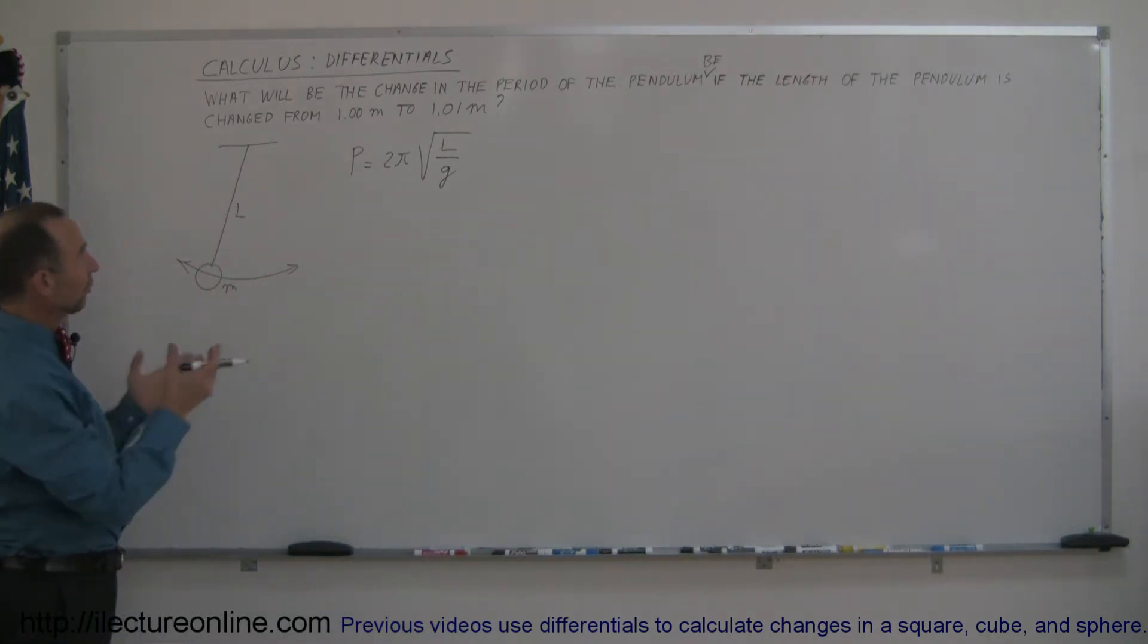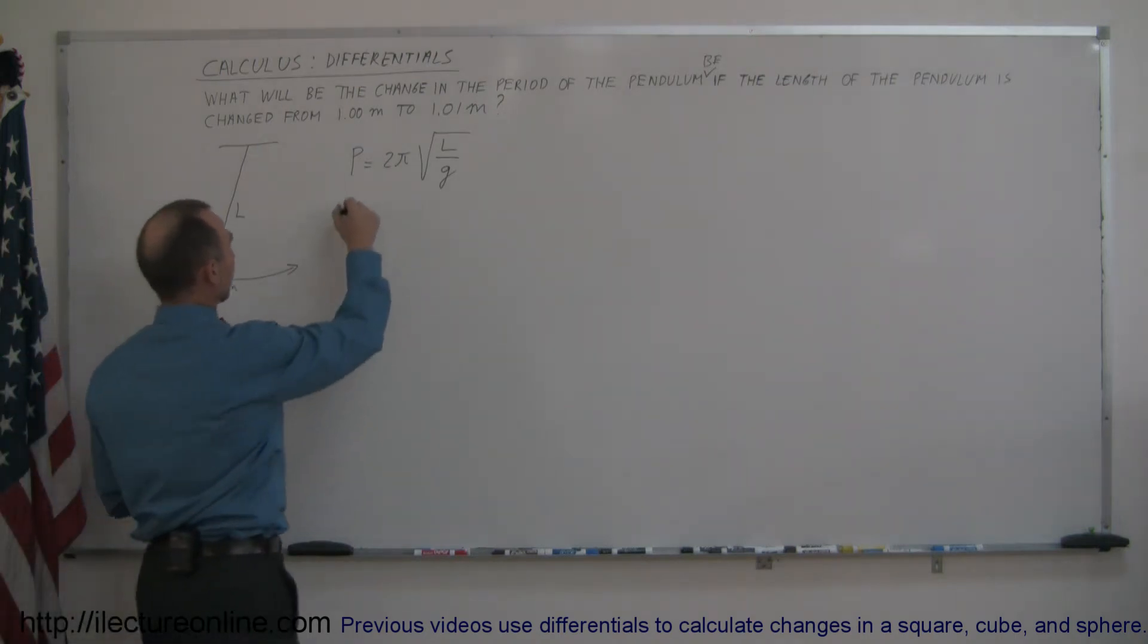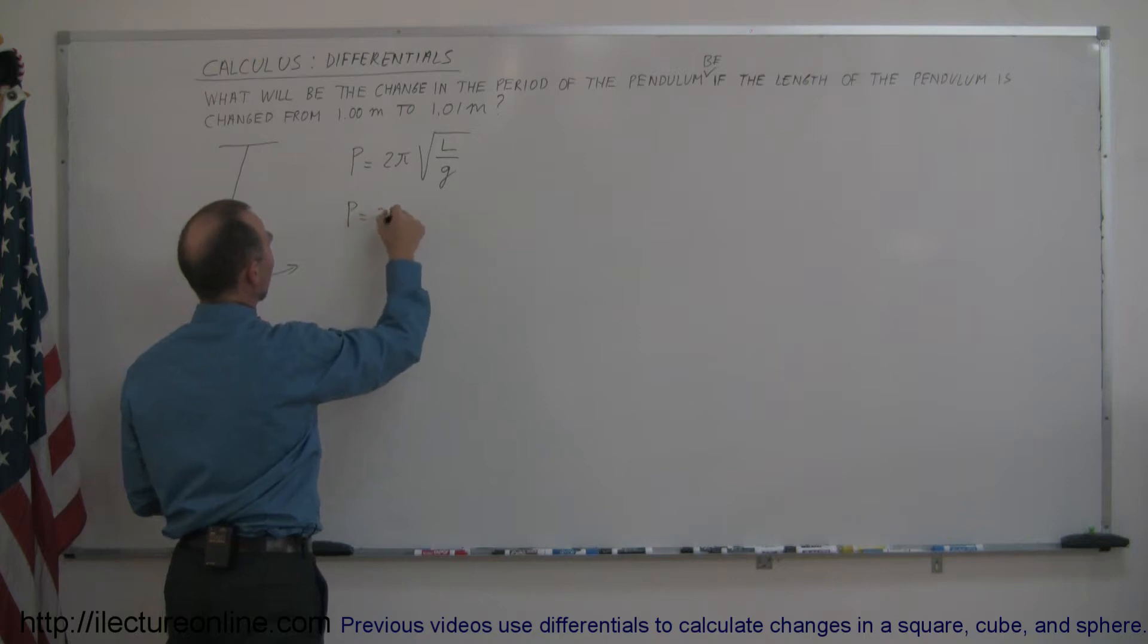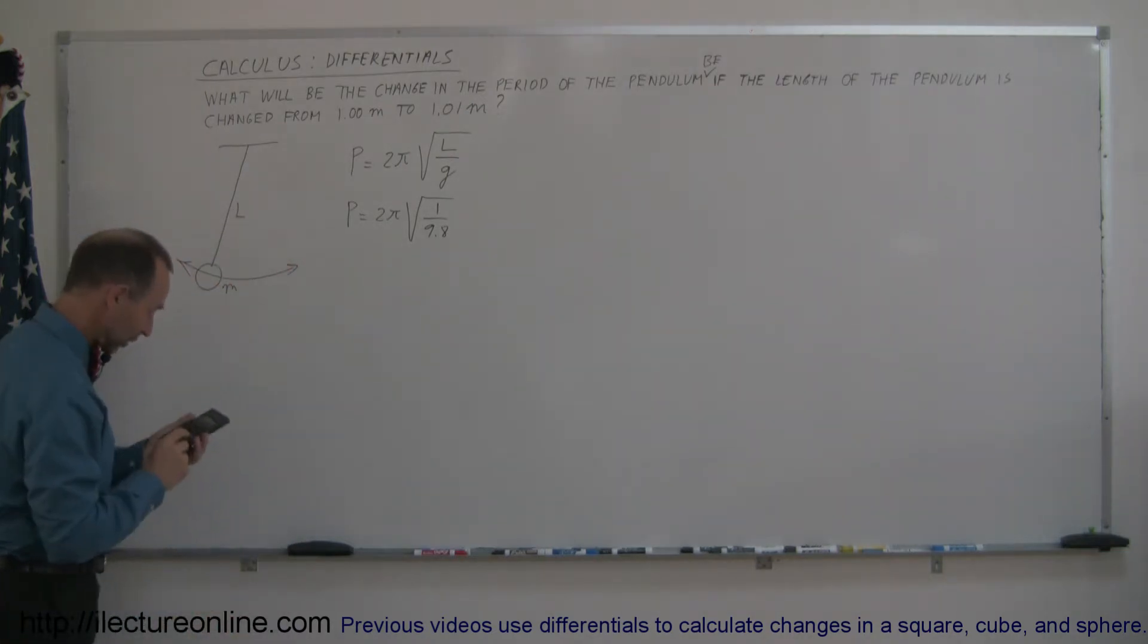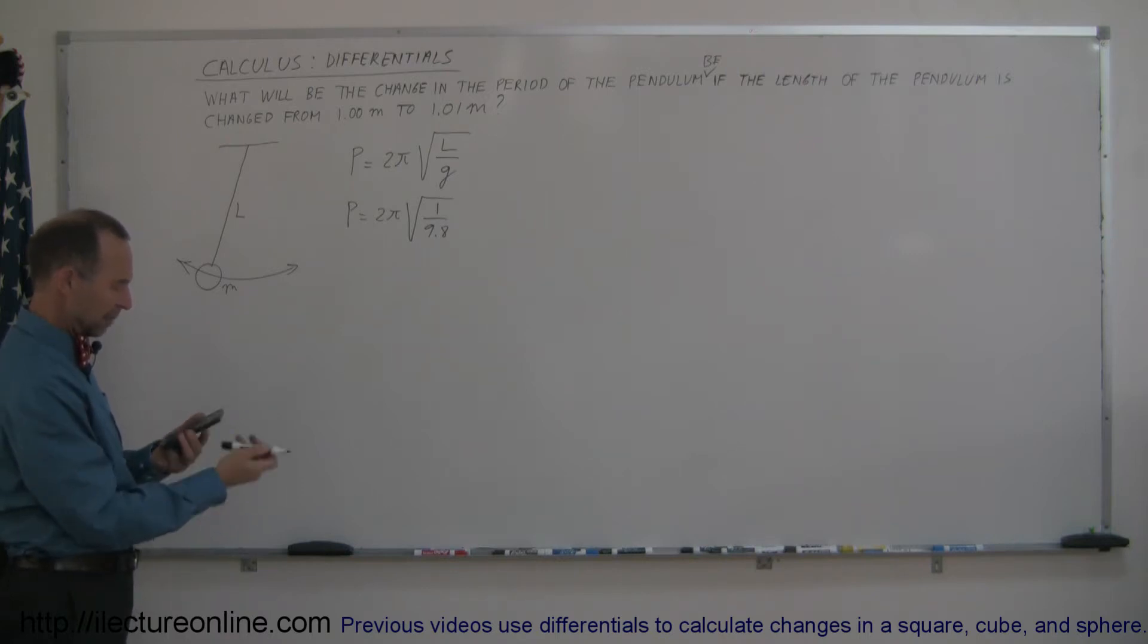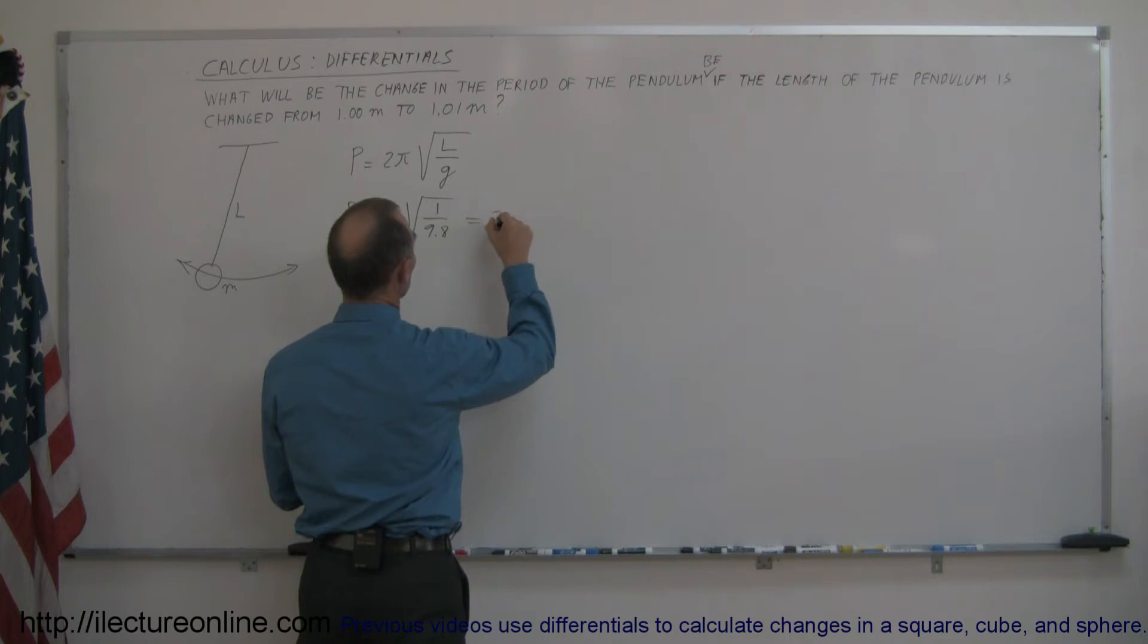Alright, so let's first figure out what the period will be when the pendulum length is 1 meter. So the period is equal to 2π times the square root of 1 divided by 9.8, because the acceleration of gravity is 9.8 meters per second squared. So working this out, we get 1 divided by 9.8, take the square root and multiply times 2 and then multiply times 3.14159, which is π, and the period is exactly 2.007 seconds.